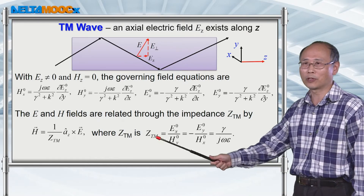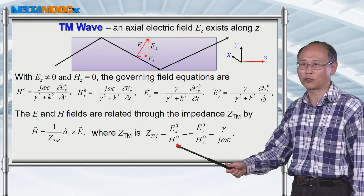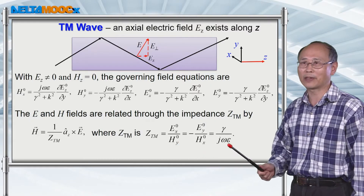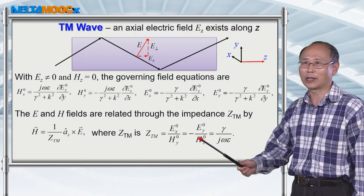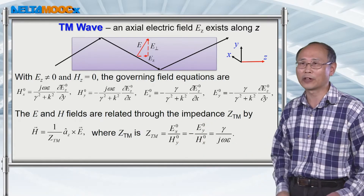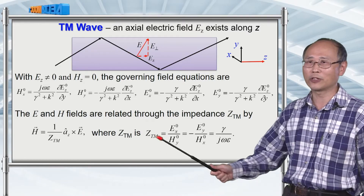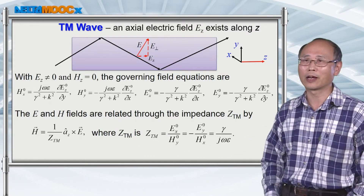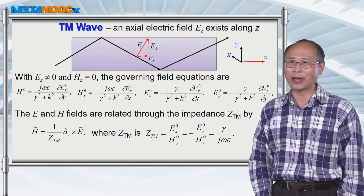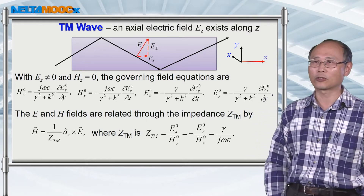For example, if you take the ratio of Ex over Hy, then you end up having a ratio that is also equal to the minus Ey over Hx. And this ratio is called the wave impedance for this TM guided mode inside such a structure.